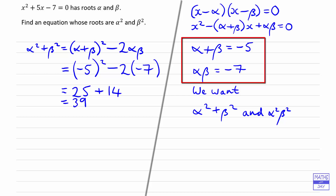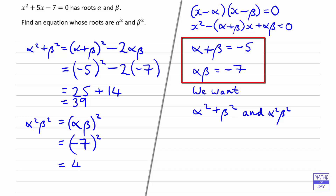And then working out the product of alpha squared and beta squared — in terms of alpha and beta, that's (alpha beta) squared. And alpha beta is negative 7, so that's negative 7 squared, and so that's going to be 49.